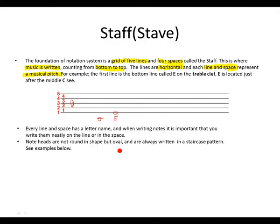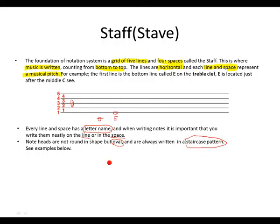Every line and space has a letter name — like we've just explained that the first line is an E. We've used letters to label our lines and spaces. When writing notes, it is important that you write them neatly on the line or inside the space. Note heads are not round in shape but oval — remember this, not round but oval. And they are always written in a staircase pattern.